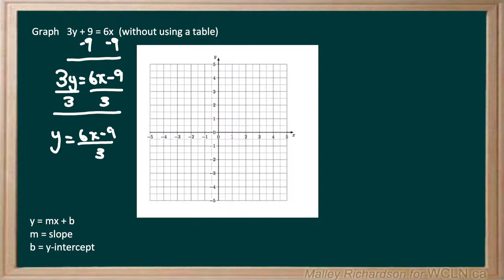But we want to get rid of this denominator down here. So we'll break it apart so we have y equals 6x over 3 minus 9 over 3.